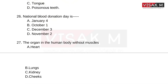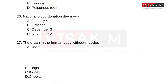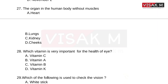National Blood Donation Day is on which date? Options: January 4, October 1, December 3, November 2. The answer is October 1 — October 1 is National Blood Donation Day.